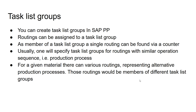Within a routing group or task list group, individual routings can be identified via a counter index, which is used to find the specific routing you are looking for. It is also important to understand that for a given material there can be various routings — there is no one-to-one relationship between a material and a routing. It is basically a one-to-many relationship.